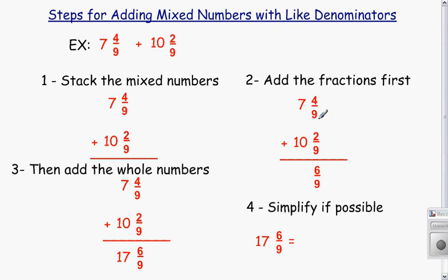The next thing we're going to do is add the fractions first. I add 4/9 and 2/9, adding like denominators. The denominator stays the same. I add the numerators. I get 6/9.